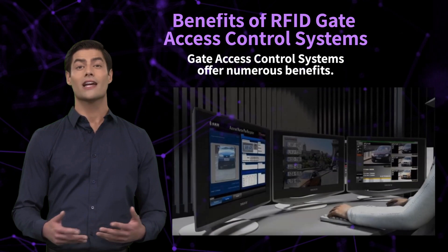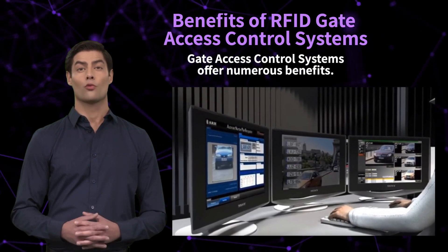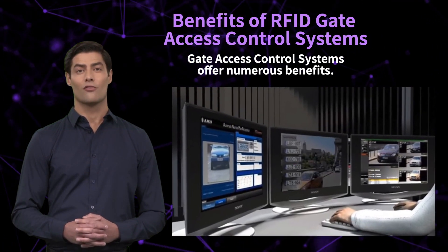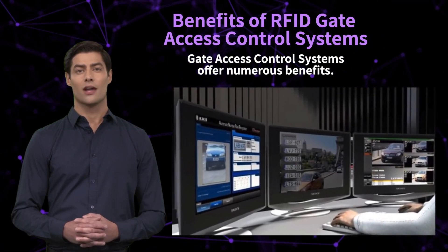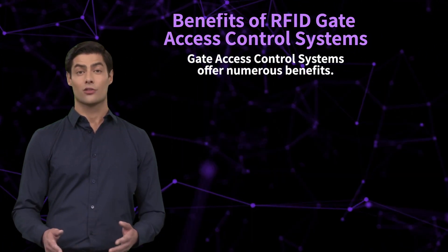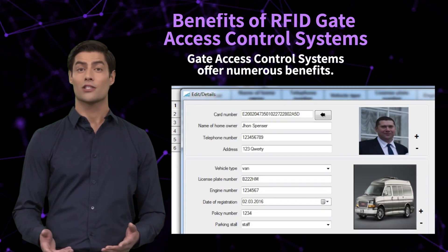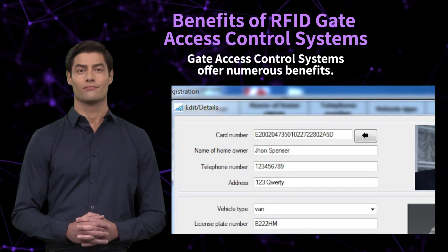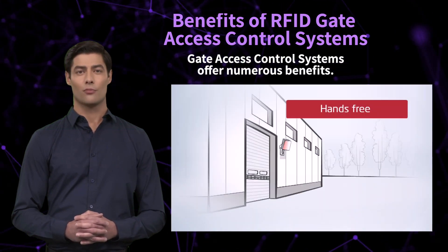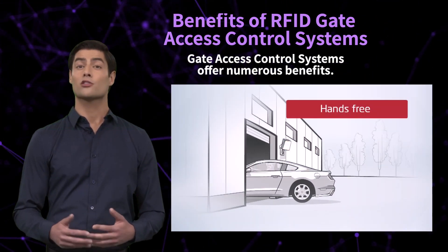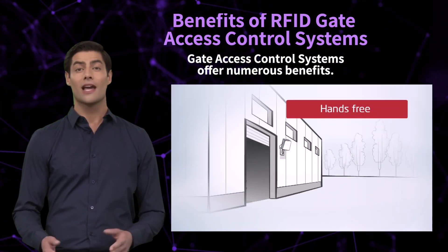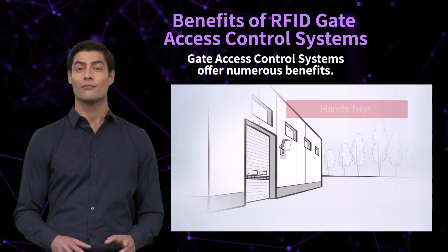Authorization: the access control software checks the identifier against its database of authorized users and their access permissions. If the identifier is valid and the user has the necessary privileges, access is granted.